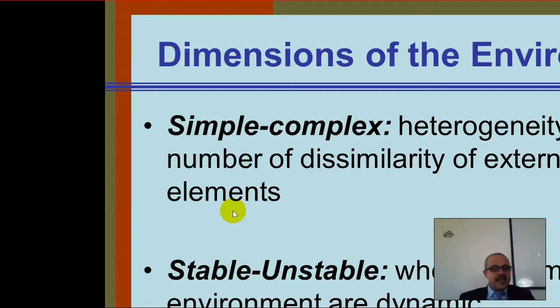In this section, we've got the dimensions of the environment: simple and complex. In the simple-complex dimension, it's the heterogeneity — the number of dissimilarities of external elements.